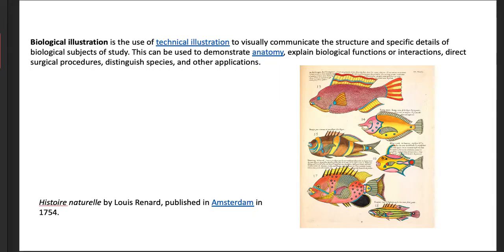So if we look back in history, it's basically just technical illustration, and most of these people have art backgrounds. It's gone back hundreds and hundreds of years since the invention of the book, essentially. And what they would have showcased would be anatomy of any kind of being on Earth, including humans. It would also explain the biological function or interactions, sometimes through anatomical dissection, as well as surgery and anything medical. It would distinguish species, so lots of comparative illustrations among species.